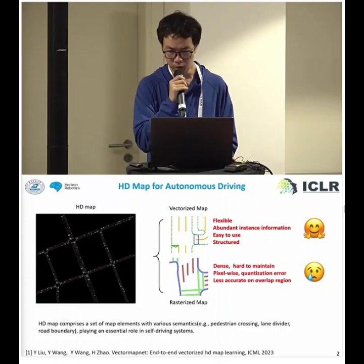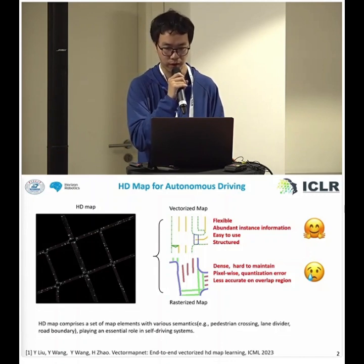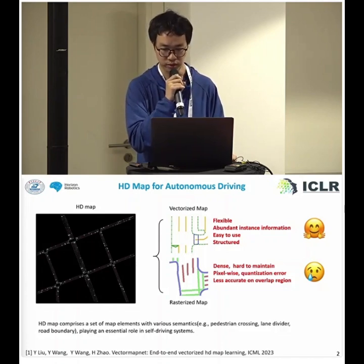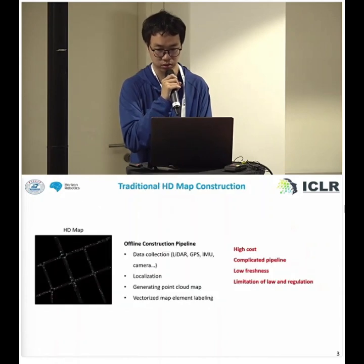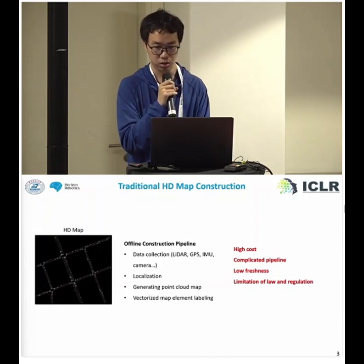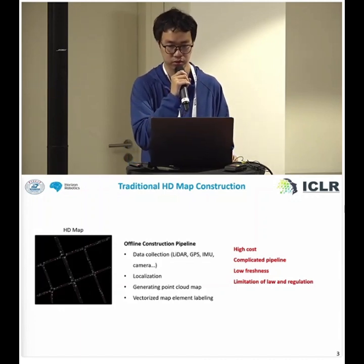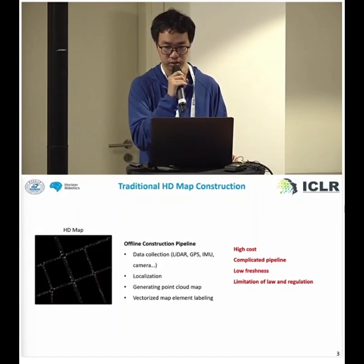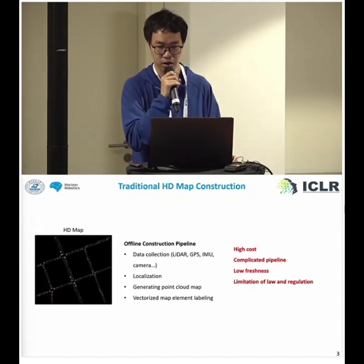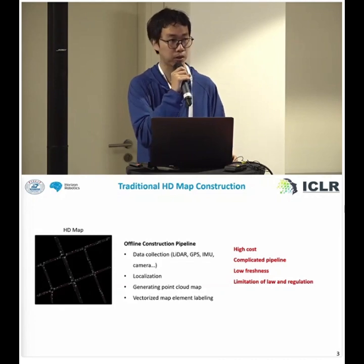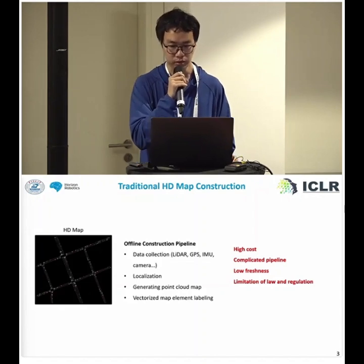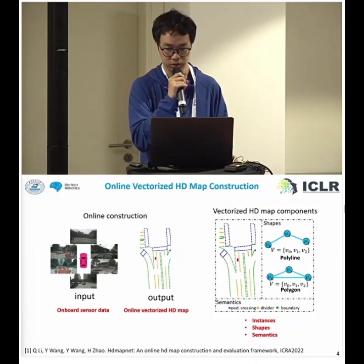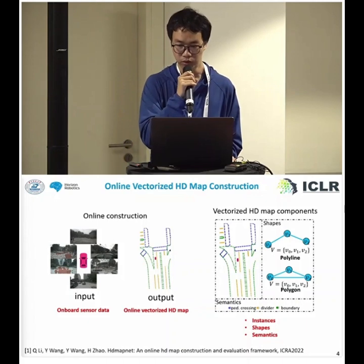The High Definition map, abbreviated as HD map, is an essential component of autonomous driving, comprising map elements with various semantics vital to planning and control. This information can be represented as either a vectorized map or a rasterized map. The rasterized map uses dense pixels which are hard to maintain and suffer from quantization error, while vectorized maps offer high flexibility, abundant instance information, and are highly structured.